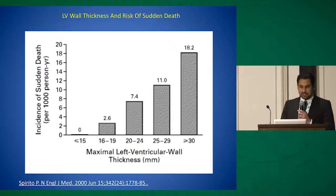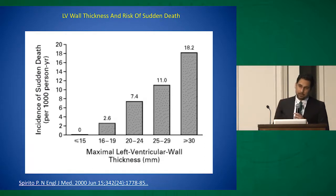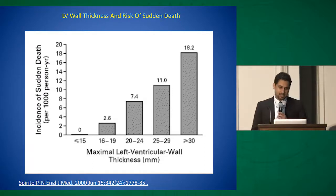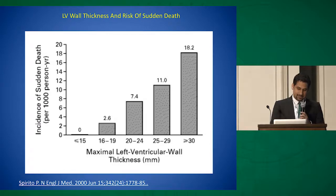One example is left ventricular wall thickness. Nothing magical happens at 30 millimeters — it's a continuous spectrum. The disease risk doesn't change from 29 to 30 millimeters. So it's a continuous gradient, and prescribing it as a binary variable in guidelines may be a little problematic.